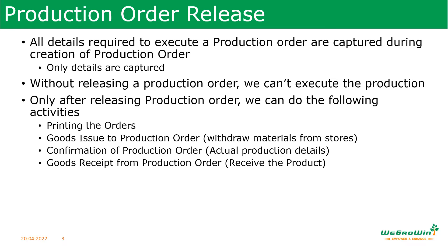After releasing the production order only, we can do activities like printing the production order, withdrawing material from stores to issue goods to the production orders, entering the production confirmation details, and receiving the material from production — that is the goods receipt from the production order. These things we can do only when we release the production orders. With the production order in created status, we cannot do this. So releasing production orders is very important.